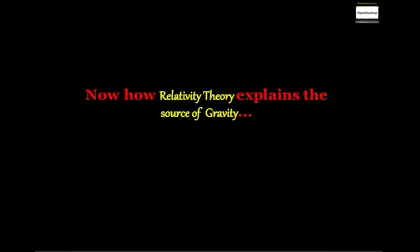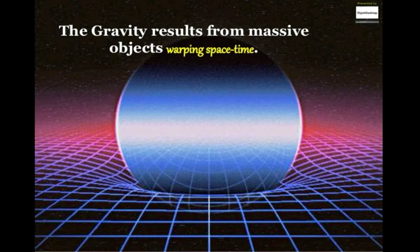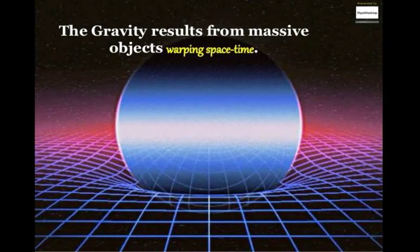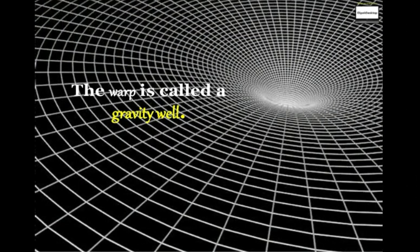Now how does relativity theory explain the source of gravity? Gravity results from massive objects warping space-time, and this warp is called the gravity well.